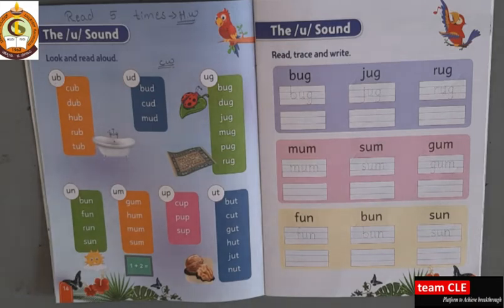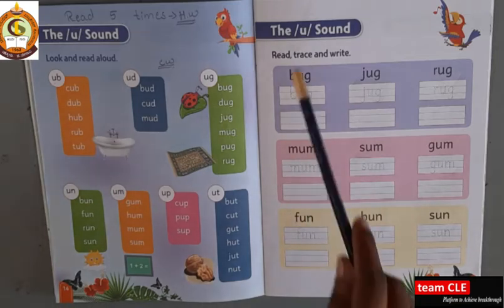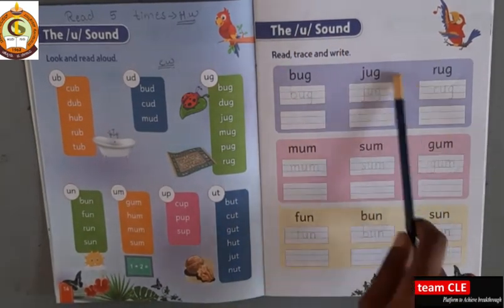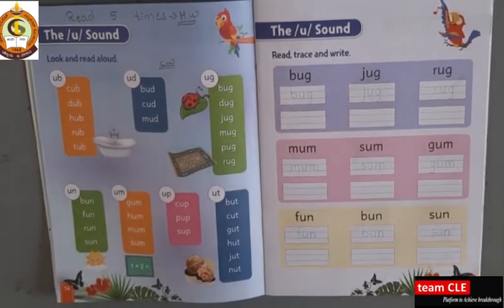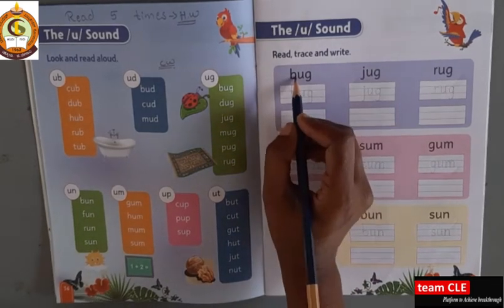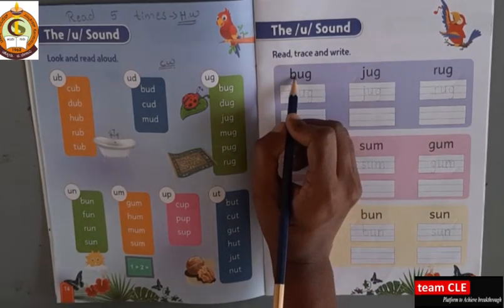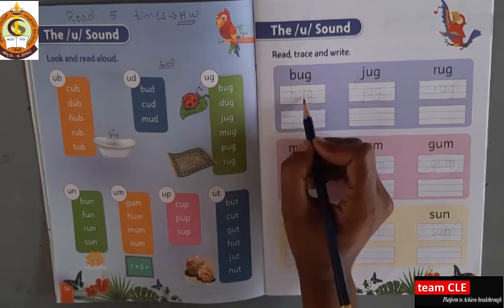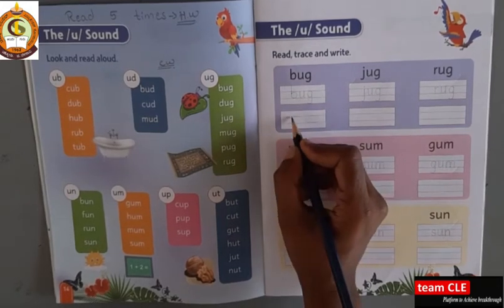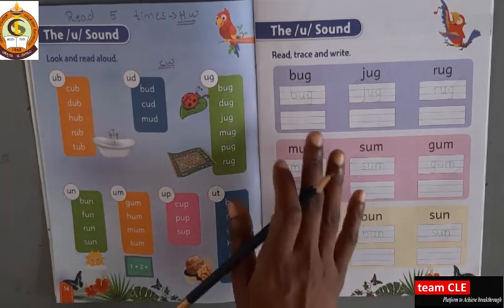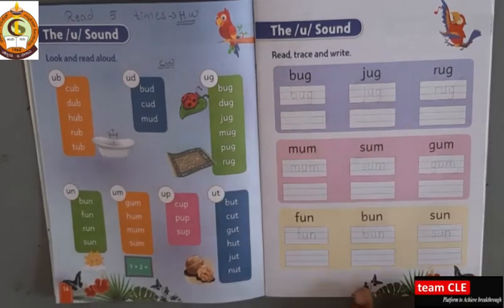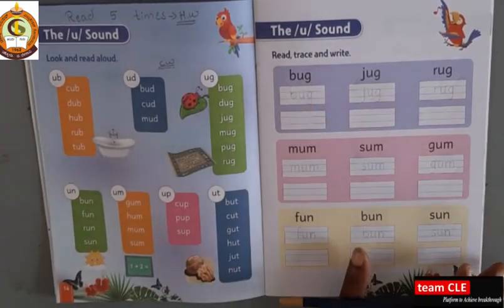So these are the five vowels. Yes, very good. So children, in today's class, we will write and we will trace and we will read the U sound words. So we will read it, and we will trace it, and we will write it. Yes, so everyone has to spell the spelling, read the words, and dress these words, then write it here.